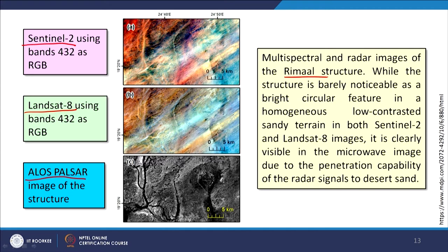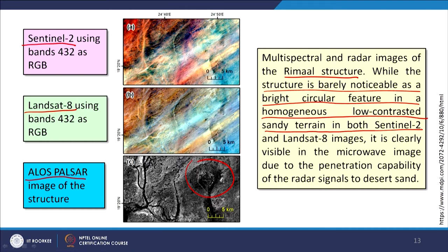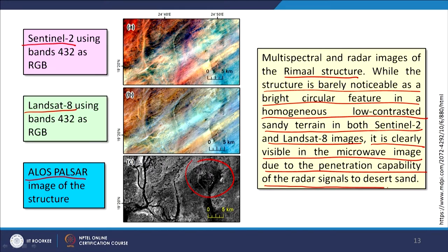The structure visible in the PALSAR image is the Riemel structure, which is barely noticeable as a faint circular feature in the homogeneous low-contrast sandy terrain in both the Sentinel and Landsat images. Because the area is covered with sand, the optical images are hindered by the top surface. But radar can penetrate this dry soil and reveal the Riemel structure very clearly in the microwave image due to penetration capabilities in desert sand.